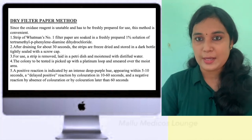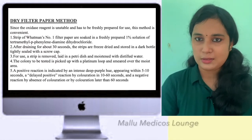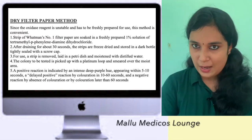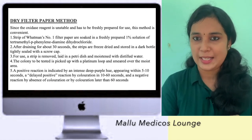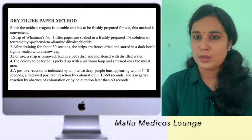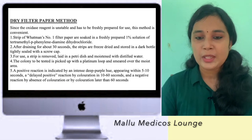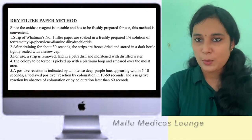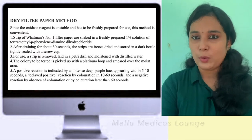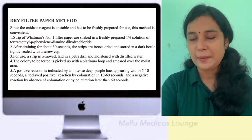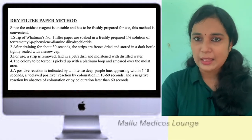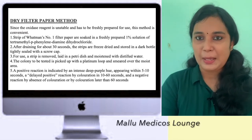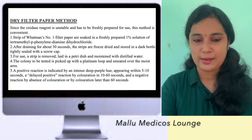We cut strips of filter paper and saturate them with freshly prepared oxidase reagent. These saturated strips are then dried and stored in dark bottles in the refrigerator. To test, we take a colony from the culture plate using a sterile wooden applicator stick and rub it onto the filter paper strip.